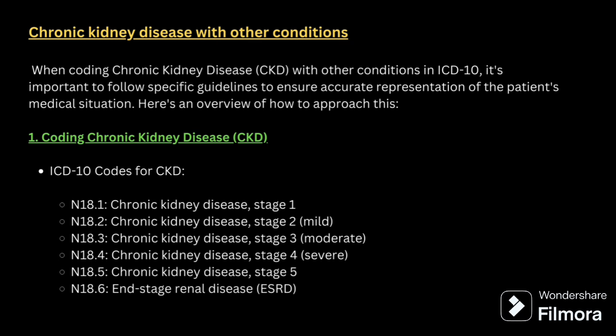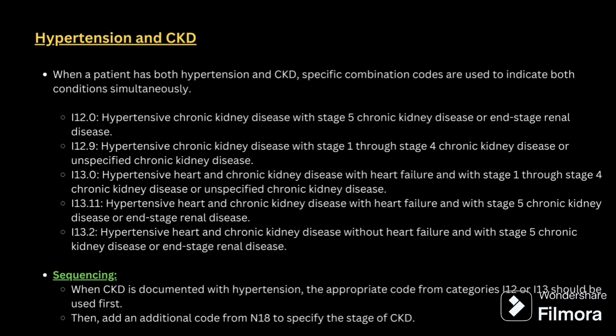Next comes CKD with other conditions. When coding for CKD with another condition, it is important to follow the guideline. First you have to know all the CKD codes — stage 1 through stage 6 — and then you have to see what other condition CKD is happening with. Based on the other conditions, the CKD codes will be arranged.